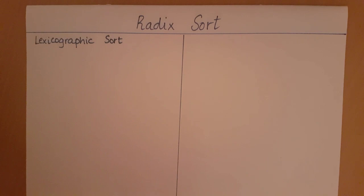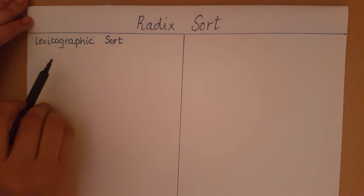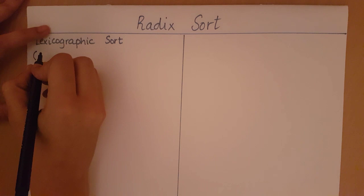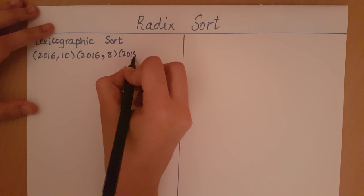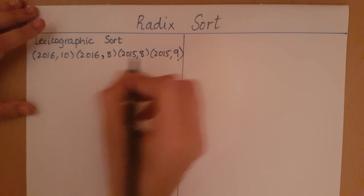So what is a lexicographic sort? Let me explain with an example. Consider a collection of tuples — let's say year and marks. These are my collection of tuples of years and marks.